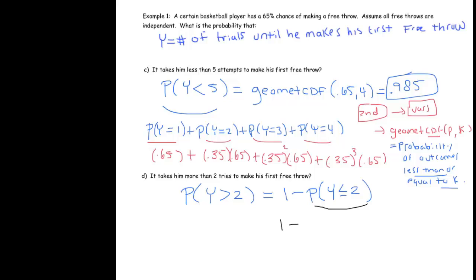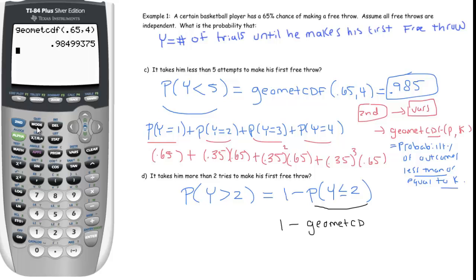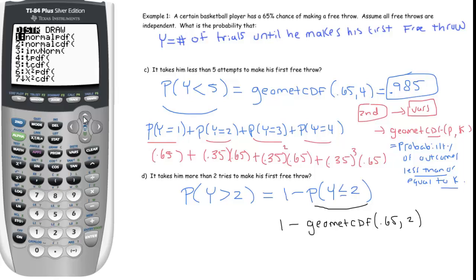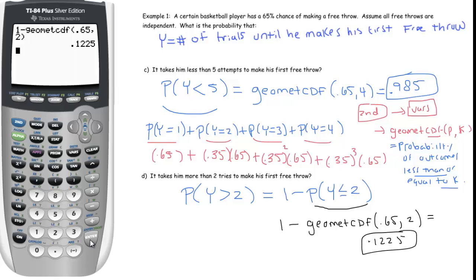And this we can use our calculator for. So this would be 1 minus, we'll go to our calculator, geometCDF 0.65 comma 2, and we'll make sure to subtract that from 1 to get 0.1225.